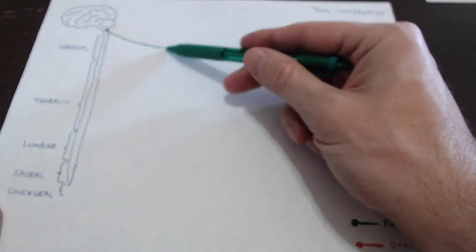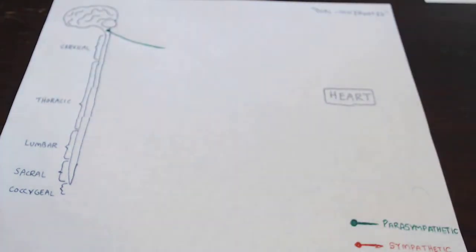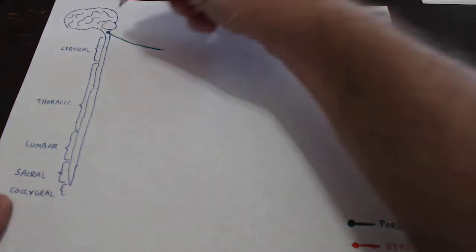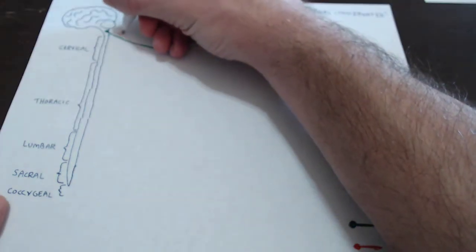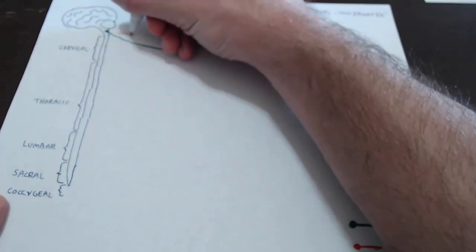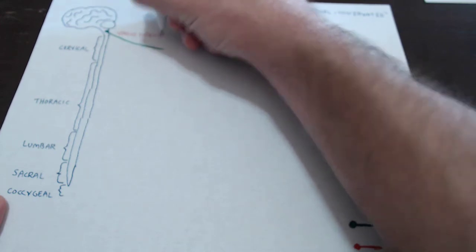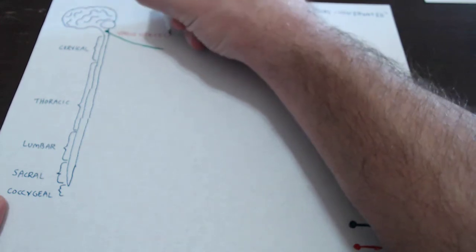So what we have here is a cranial nerve, and we mentioned that parasympathetic pathways tend to come out of cranial nerves. Most parasympathetic pathways — not all, but most — come out of the same cranial nerve. This is the vagus nerve, which is cranial nerve number 10.